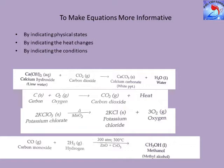The second way is to indicate heat changes. For example: carbon + oxygen → carbon dioxide + heat; heat is evolved, so it is an exothermic reaction. The third way is to indicate conditions. Potassium chlorate, heated in the presence of manganese dioxide (MnO₂) catalyst, decomposes to form potassium chloride and oxygen gas. The catalyst MnO₂ is indicated near the arrow, and the delta symbol (Δ) stands for heat.